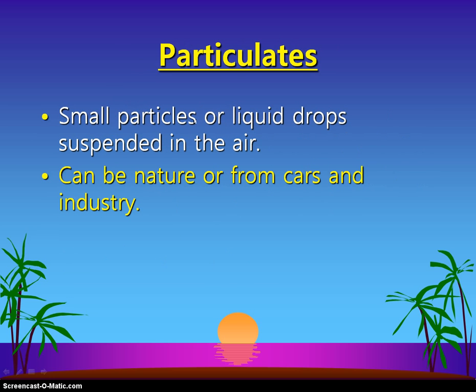Most of our particulates are going to come from natural processes on the planet — pollination causing allergies, dust in the air, those types of things. These aren't things we can really control, but they are there and they do cause problems. So these are our five pollutants that we'll be focusing on in this unit.